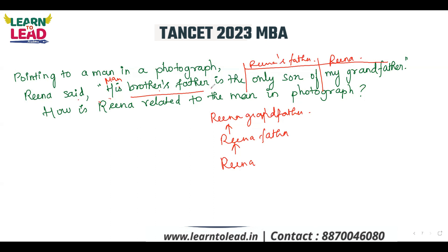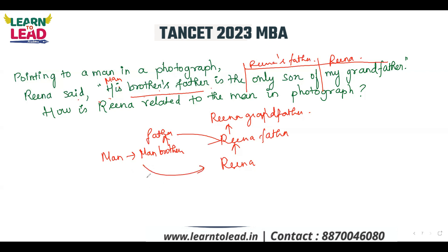His brother's father — that is the man's brother's father. Let us consider the man: the man's brother's father is Reena's father. So how is Reena related to the man in the photograph? Sister. That is your answer.